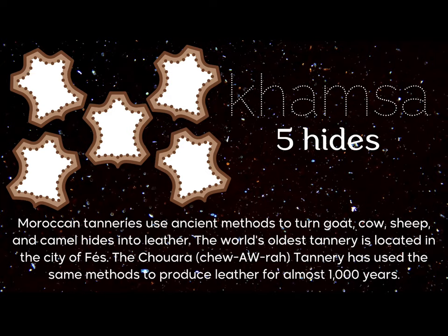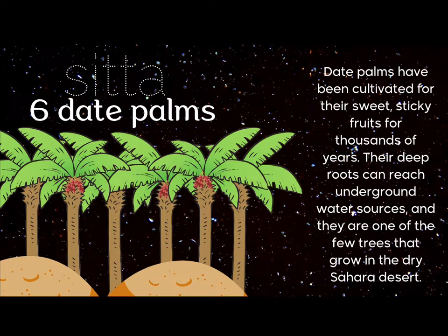Five — humsa. Five hides. Moroccan tanneries use ancient methods to turn goat, cow, sheep, and camel hides into leather. The world's oldest tannery is located in the city of Fez, and this tannery has used the same methods to produce leather for almost one thousand years.